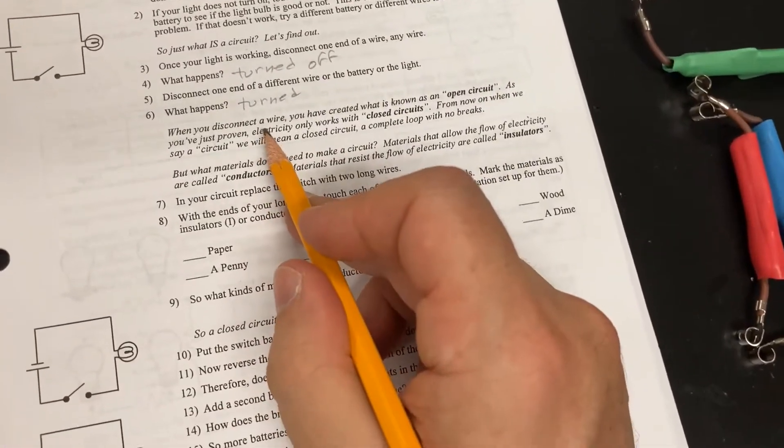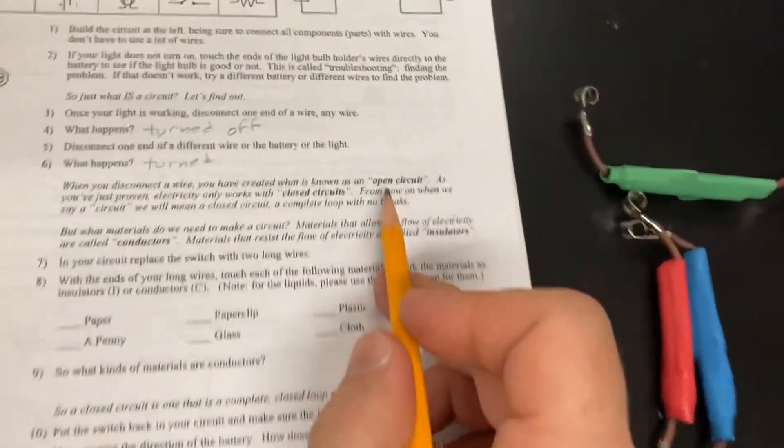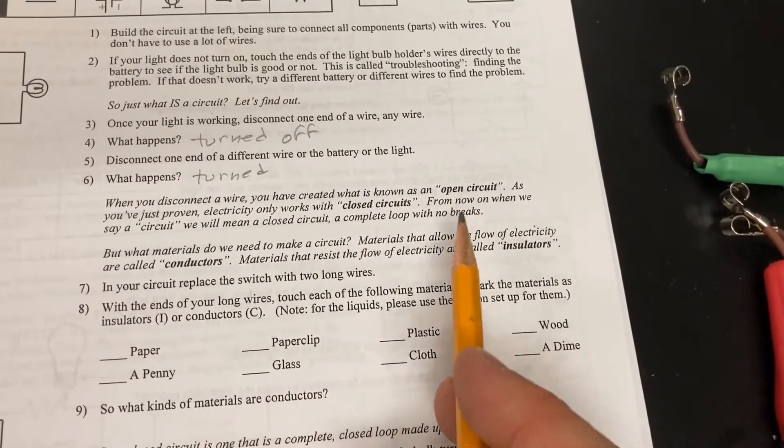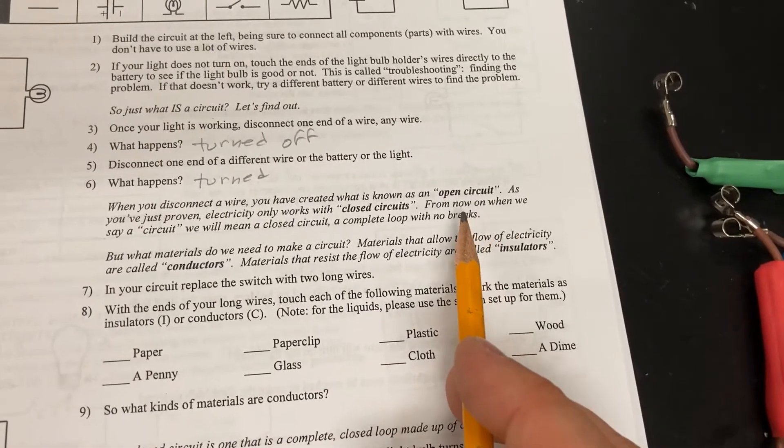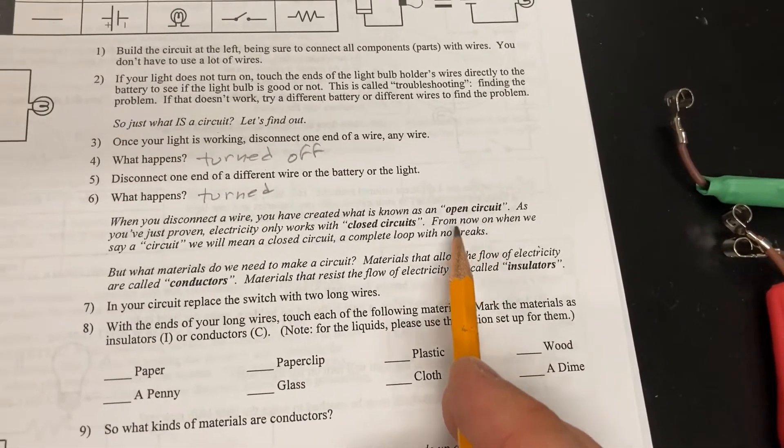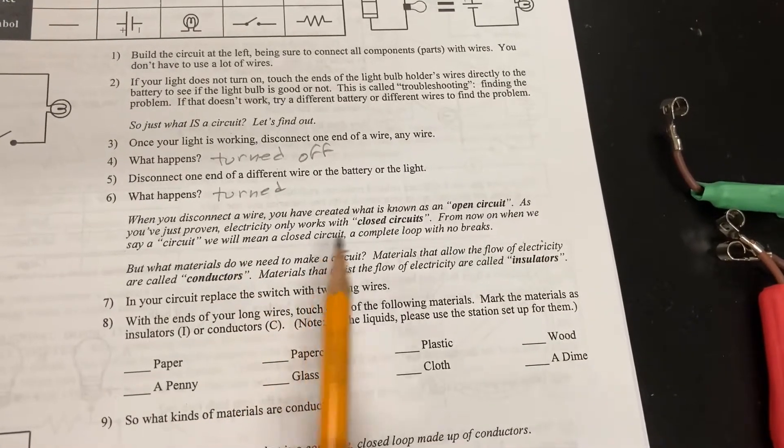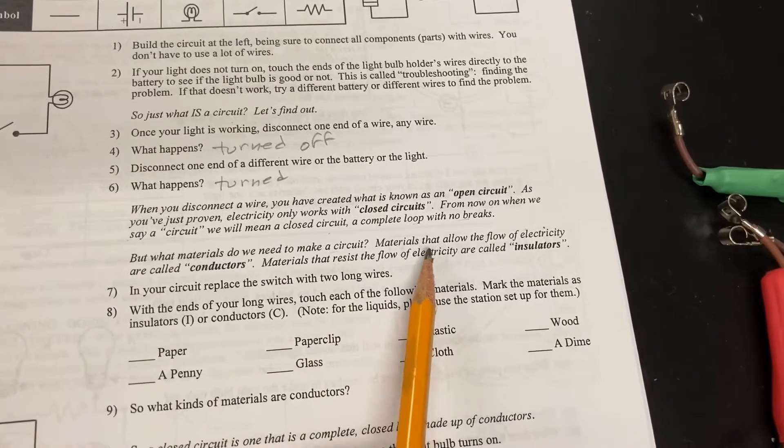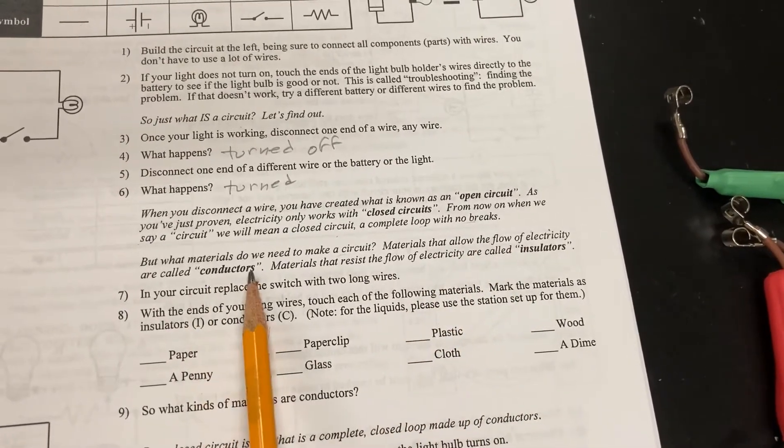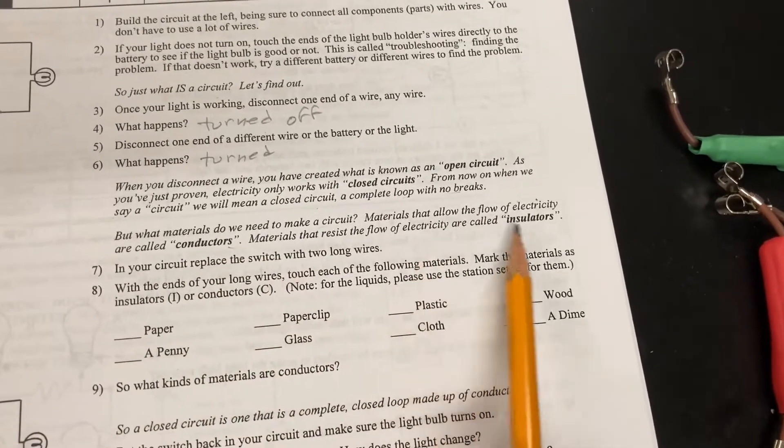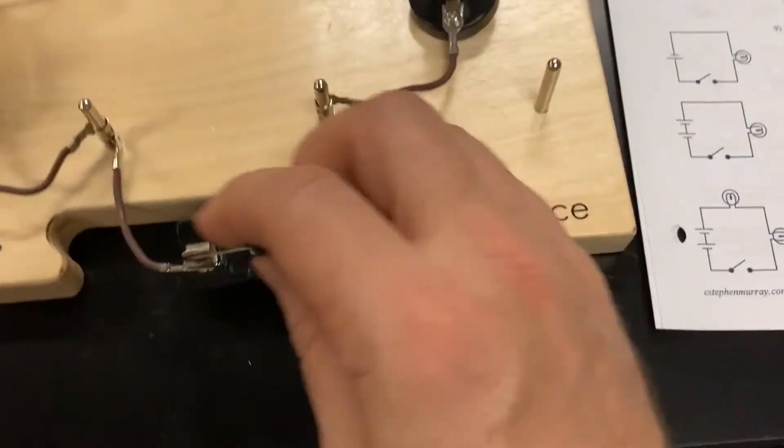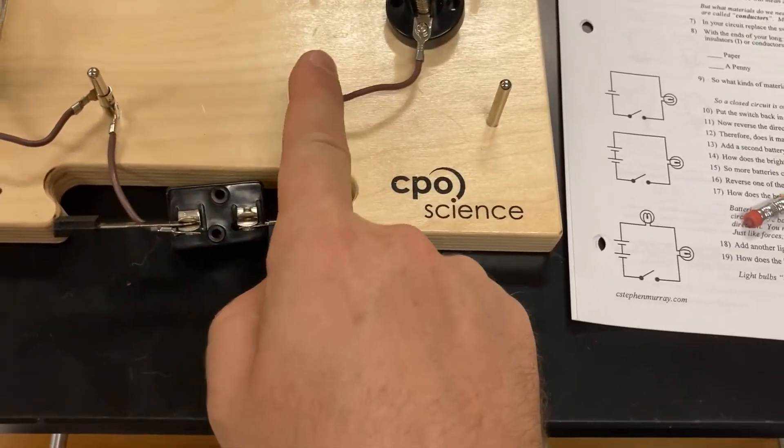When you disconnect a wire, you've created what's known as an open circuit. As you've just proven, electricity only works with closed circuits. Think about it like a loop of pipes with water going through it. The water can't go through if there's a break. From now on, we'll say a circuit when we mean a closed circuit. A complete loop with no breaks. But what materials make a circuit? Materials that allow the flow of electricity are called conductors. Materials that resist the flow are called insulators. In your circuit, replace the switch with two long wires. To make it easier on me, I'm just going to open here. Or that little spot right there. Okay? That's my opening.